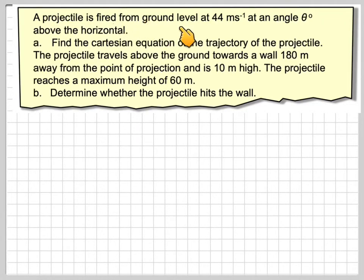A projectile is fired from ground level at 44 metres per second at an angle of theta degrees above the horizontal. Find the Cartesian equation of the trajectory of the particle.